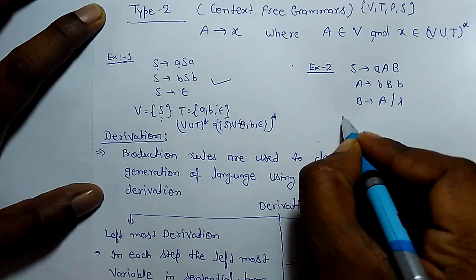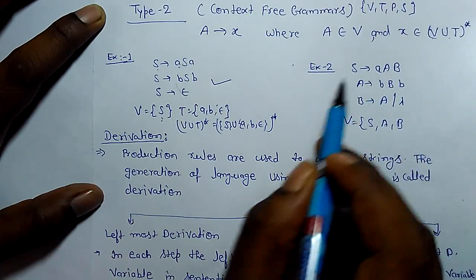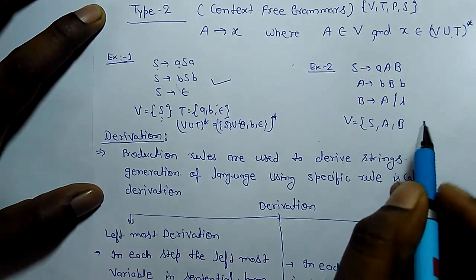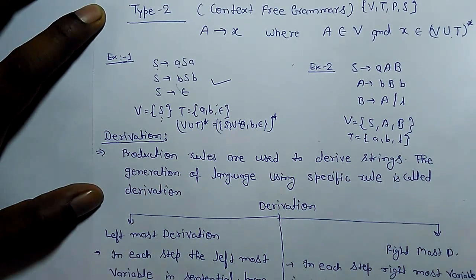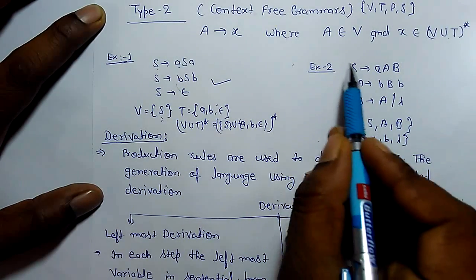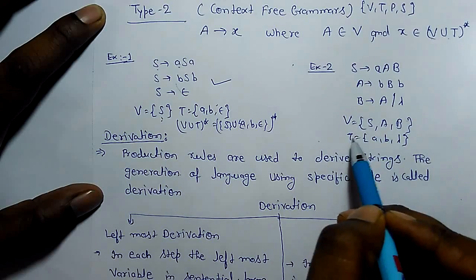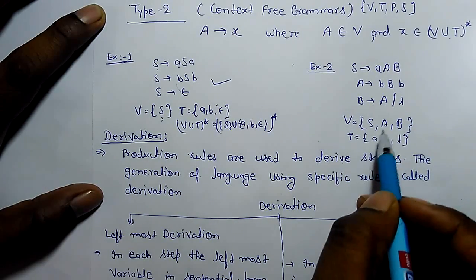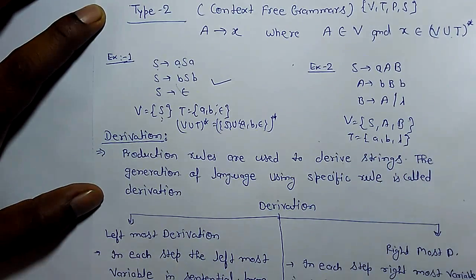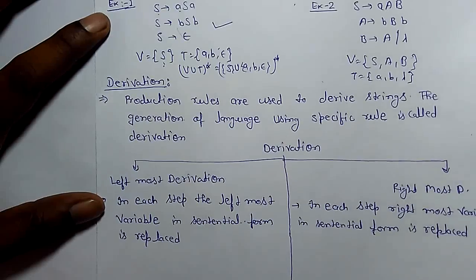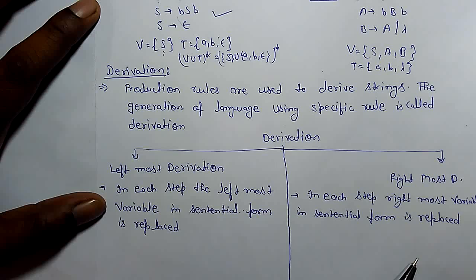Let's check this second grammar. The variables are S, A, and B — whatever is written in capitals are variables. The terminals are small a, small b, and lambda. We can see the left side is part of variable, and the right side consists of variables and terminals closure — we can find the right side from the combination of variables and terminals.